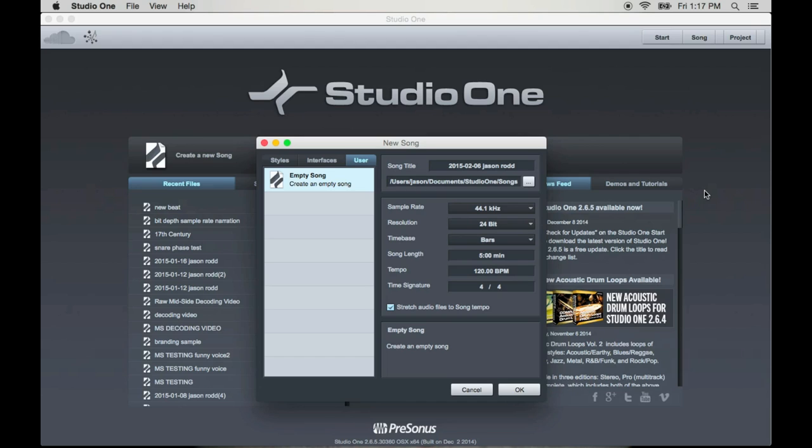And judging by the math and my ears taking over 44,000 snapshots per second is more than enough. So a bit depth of 24 and a sample rate of 44.1 will easily be sufficient for producing professional results.